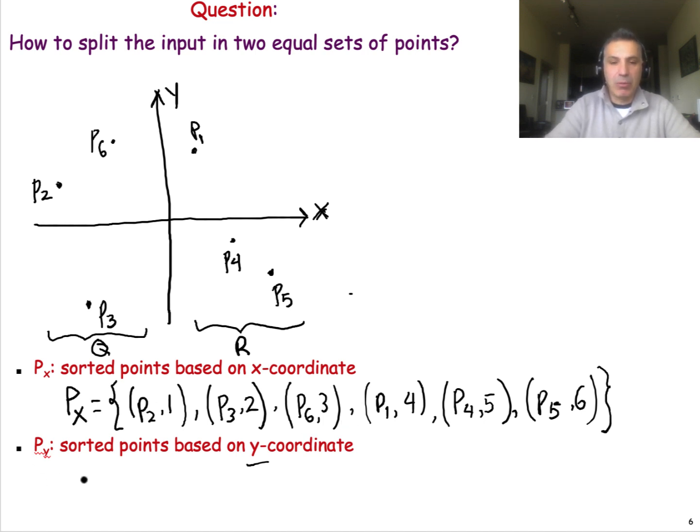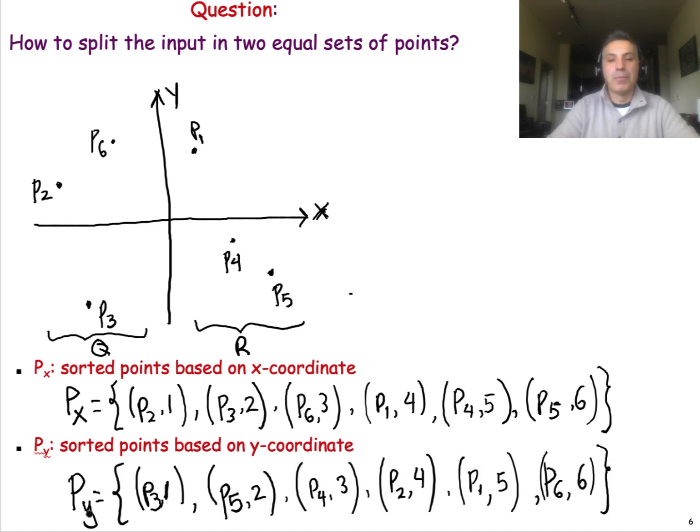Now, it turns out that we will also need, later in the algorithm, the ordered list of points based on the y-coordinate. So let's go ahead and also compute that. Initially in the algorithm, as a form of preprocessing, we are doing two sorting operations, both of them O(n log n), to get the points sorted based on the x-coordinate and based on the y-coordinate. I repeat, however, that we have split the points in these two sets, Q and R, based on the x-coordinate. So this is the ordered list of points based on the y-coordinate.